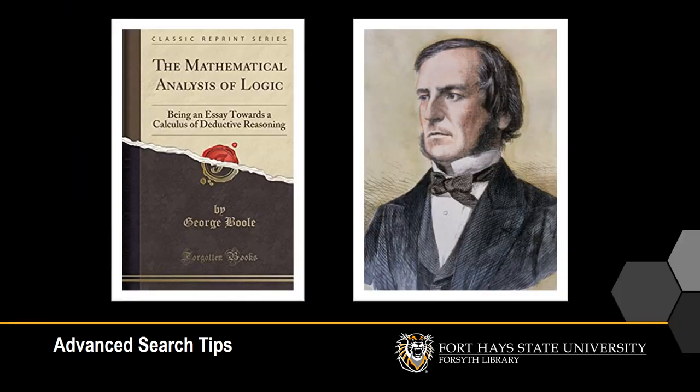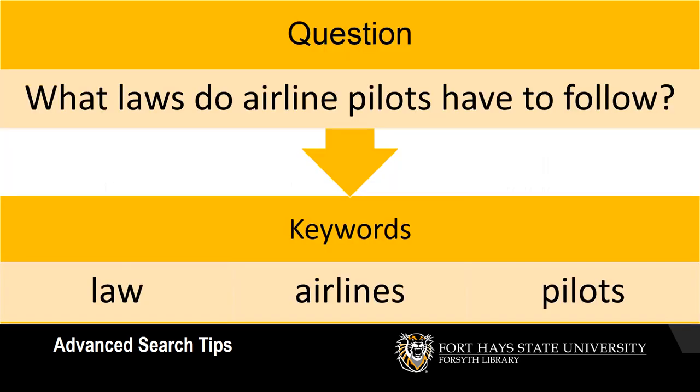Instead of phrase searching, Academic Search Premier and other library databases and catalogs use something called Boolean searching, which is based on principles set forth by mathematician George Boole. Boolean searching relies on keywords instead of phrases.